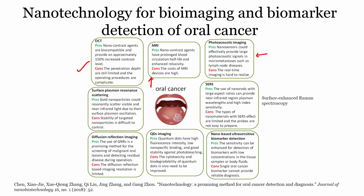For surface plasmon resonance scattering, gold nanoparticles can resonantly scatter visible near-infrared light due to their surface plasma oscillations, but the stability of target nanoparticles is difficult to control. For surface-enhanced Raman spectroscopy, nanorods with large spectators can provide near-infrared region plasmon wavelengths and high index sensitivity, but nanomaterials with SERS effect are limited and probes are not easy to operate.